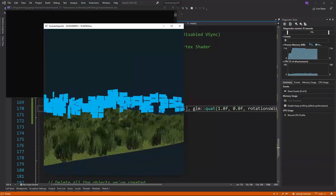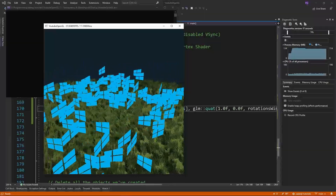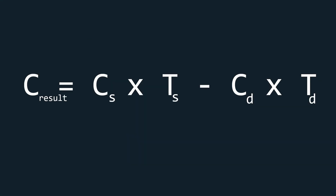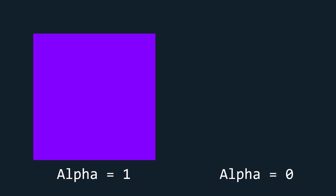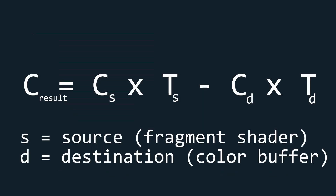In order to achieve a see-through effect we need blending. This is the formula OpenGL uses for blending different colors together. All the C terms stand for color, while the T terms stand for transparency. An alpha value of 0 is fully transparent, and an alpha value of 1 is fully opaque. The source color is the color in the fragment shader, while the destination color is the color in the color buffer.